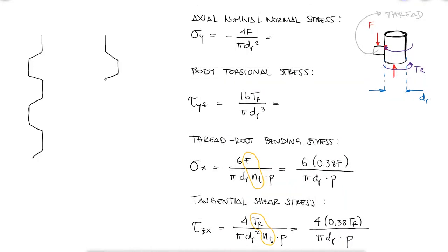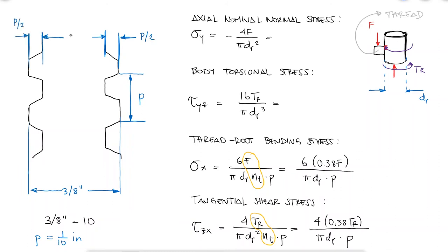For the given lead screw that we were using then, we have a major or nominal diameter of 3/8 of an inch, a pitch of 1 over 10 inches, and therefore a root diameter of 0.275 inches.